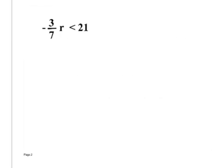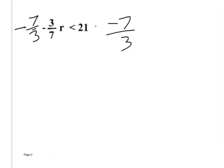Write this problem down. We would do this exactly the same as if there was an equal sign here. So we multiply by negative seven-thirds. We multiply both sides by negative seven-thirds. It cancels that out — this is R.